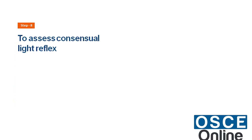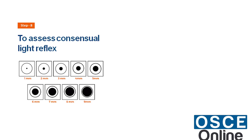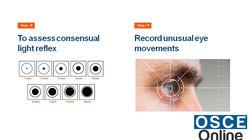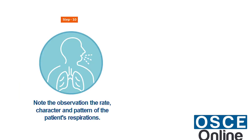To assess the consensual light reflex, record pupillary size in millimetres and reactions on the observation chart. A brisk reaction is documented as positive; no reaction as negative. Record unusual eye movements such as nystagmus or deviation to the side to assess cranial nerve damage.